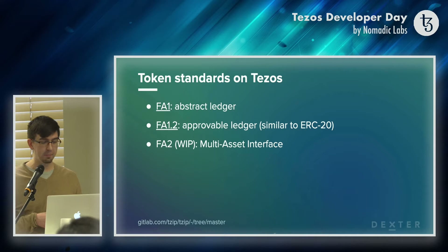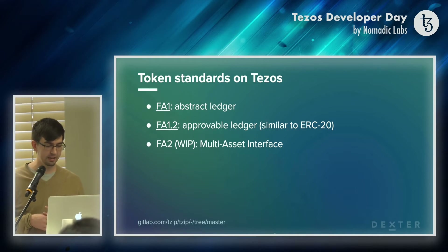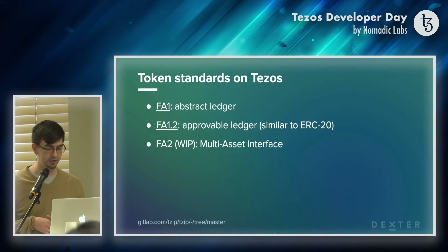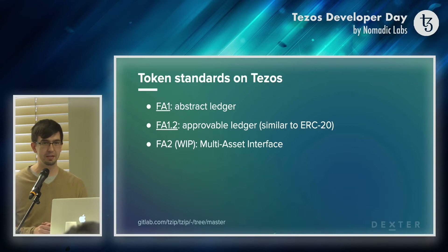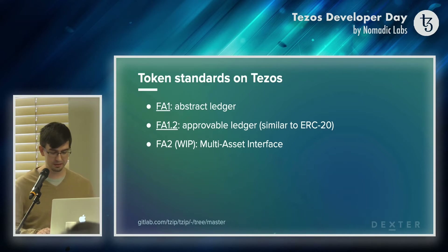Finally there's an upcoming token standard called FA2. It's a work in progress. It is a multi-asset interface, meaning a single contract can have multiple tokens that exist on it and these tokens can be of different kinds. They can be fungible — each token is the same and interchangeable — and they can be non-fungible, where each token is unique. Think something like Magic the Gathering or Pokemon. These can all be supported in FA2, and it also allows people to design their own permission systems, giving you more control.